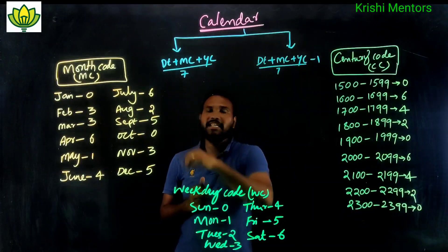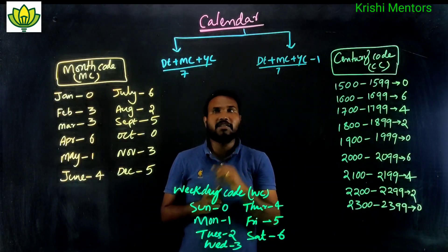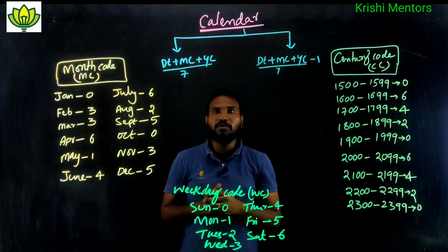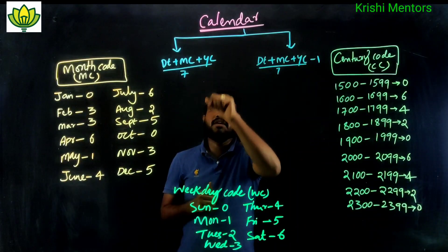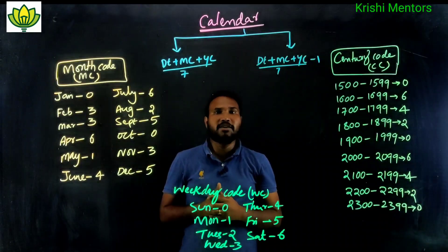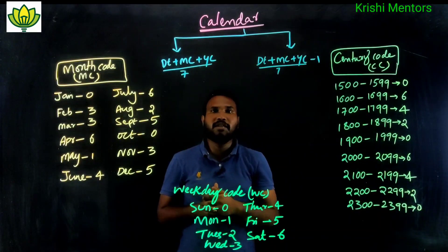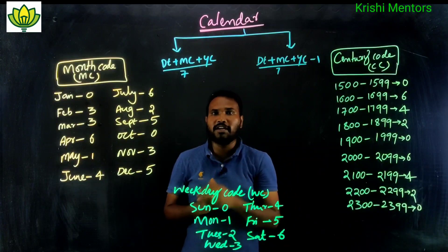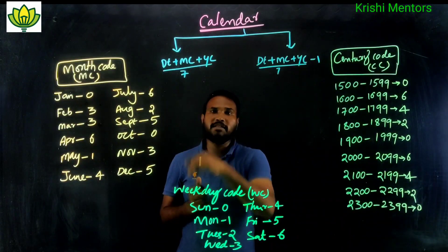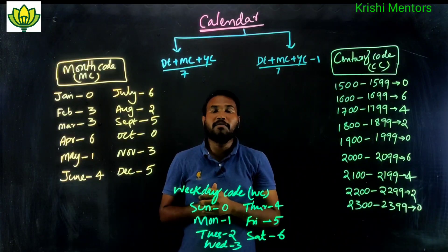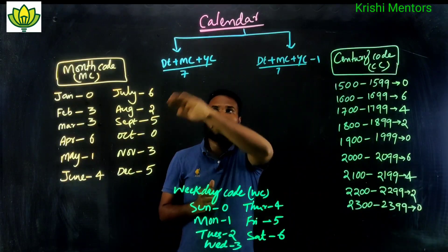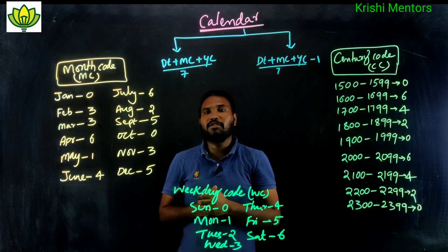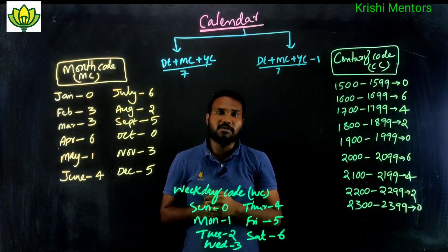First formula: DT means date, MC means month code, then YC means year code, divided by 7. We need to find the remainder to determine the day.